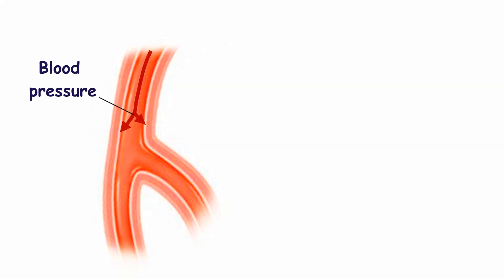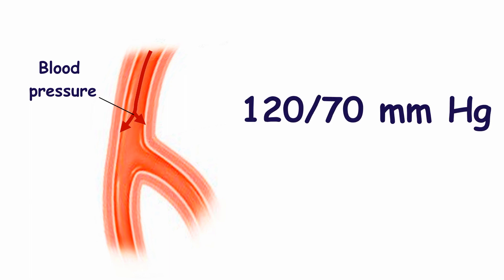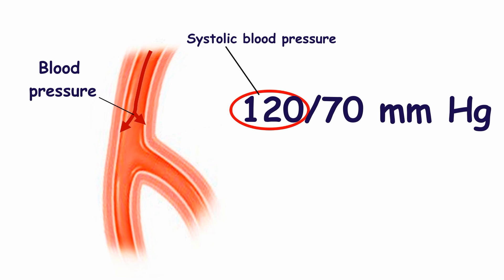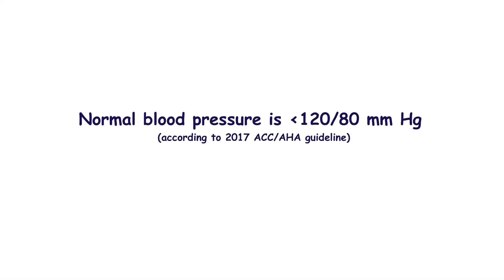The blood pressure is the pressure of blood on the arterial walls. When we talk about blood pressure, it would be shown in two numbers — for example, 120 mmHg and 70 mmHg. The first number is expressed as the systolic blood pressure and the second number is the diastolic pressure. Since 2017, the American Heart Association considers optimal blood pressure to be lower than 120/80 mmHg.